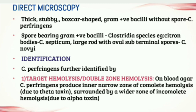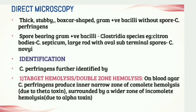Spore-bearing Gram-positive bacilli with citron body appearance suggest Clostridium septicum, and large rods with oval subterminal spores suggest Clostridium novyi. Clostridium perfringens can be identified as thick, chubby gram-positive bacilli without spores, and can be further identified by additional methods. The culture plate should be incubated anaerobically at 37 degrees Celsius for two days.